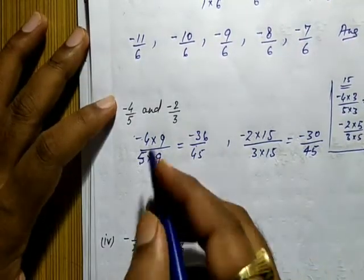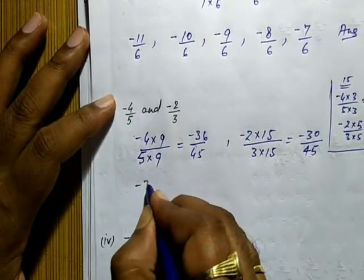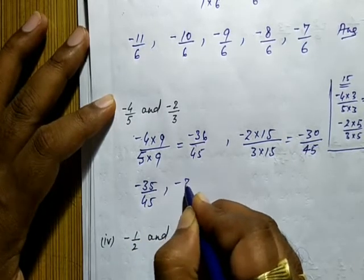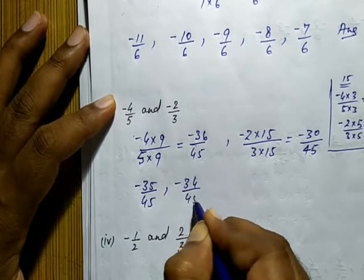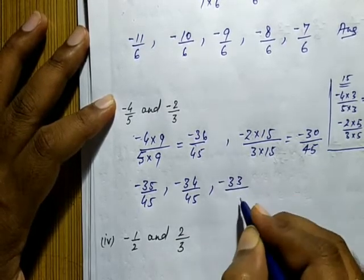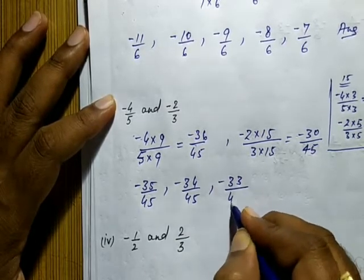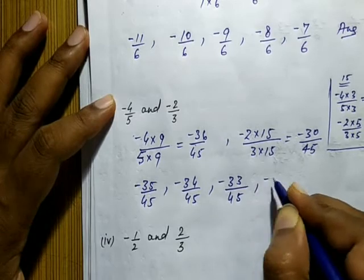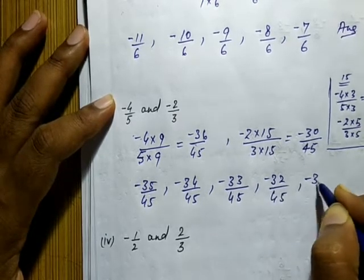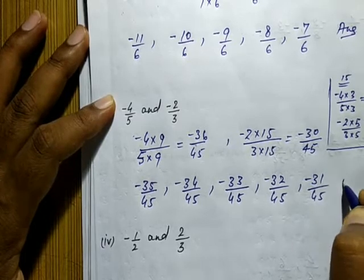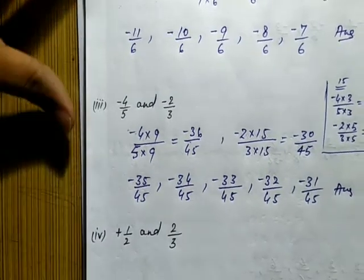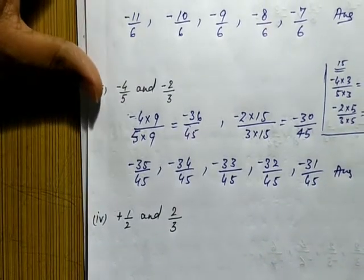So minus four upon five becomes minus thirty-six upon forty-five, and minus two upon three becomes minus thirty upon forty-five. Now it is easy to find five rational numbers between these two: minus thirty-five upon forty-five, minus thirty-four upon forty-five, minus thirty-three upon forty-five, minus thirty-two upon forty-five, and minus thirty-one upon forty-five. This is the answer.